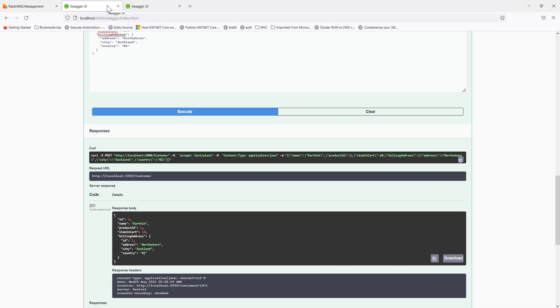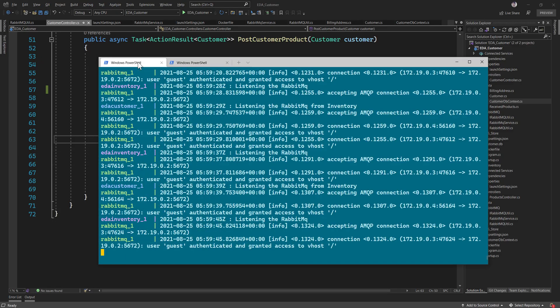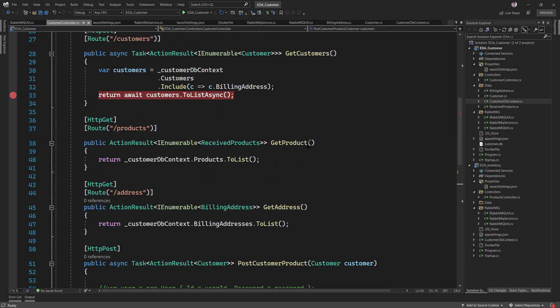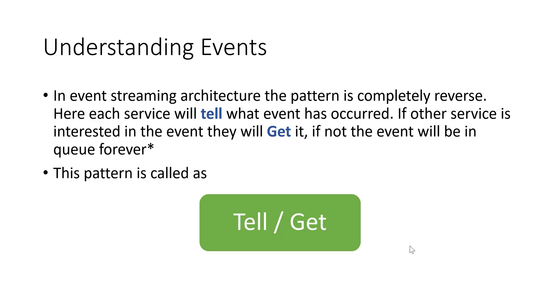This is how event-driven architecture works in practice — all these services come together and communicate automatically, without needing to call many APIs. As discussed in the earlier video, the pattern is the tell-and-get pattern: each service announces what event has occurred, and if another service is interested in that event it will receive it; otherwise the event stays queued. That's exactly what we saw in this video. Hope you enjoyed it — thank you for watching and have a great day!